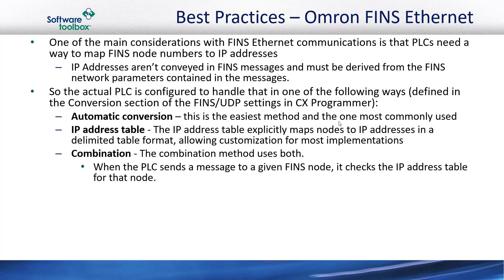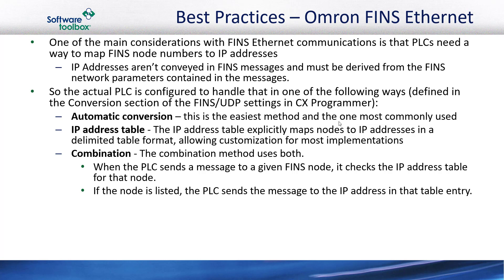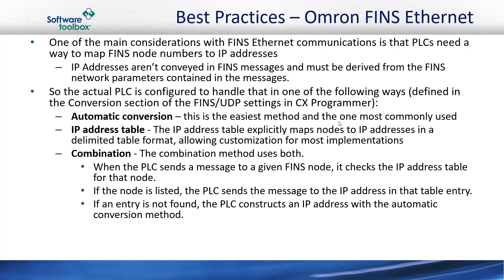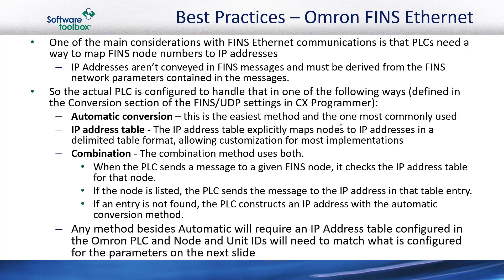When a PLC using the combination method sends a message to a given FINS node, it checks the IP address table for that node. If the node is listed in the IP address table, the PLC sends the message to the IP address in that table entry. If an entry is not found, the PLC constructs the IP address with the automatic conversion method. Any method besides automatic is going to require an IP address table configured in the Omron PLC, and node and unit IDs will need to match what is configured for the parameters on the next slide.